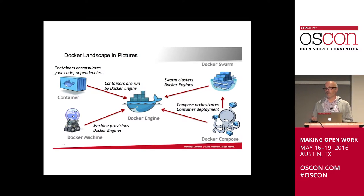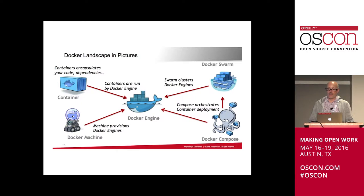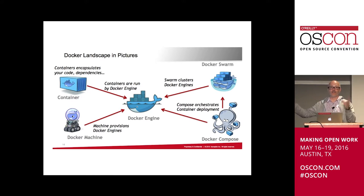When you execute a Compose file, it starts all the containers for you. On a single Docker engine all those containers start in one engine — great for development. For production you want to span this across more than one host. Docker Swarm is the native clustering of Docker engines. With Compose you can deploy to a cluster and place those containers onto different hosts.